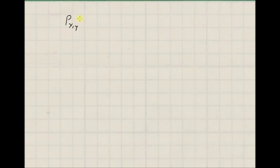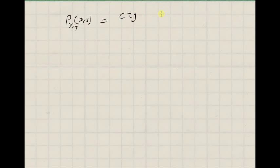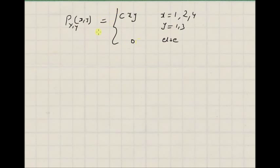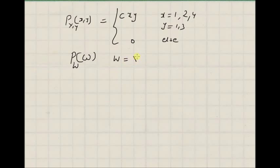Given the following joint PMF, that is joint probability mass function p(x, y), where p(x, y) is equal to c times x times y for x equal to 1, 2, 4 and y equal to 1, 3 and 0 elsewhere. Given this joint mass function, our goal is to find the probability mass function or marginal probability mass function of a random variable w, given that w is equal to x minus y.